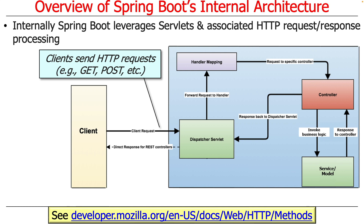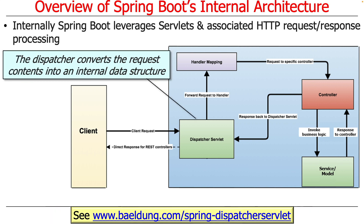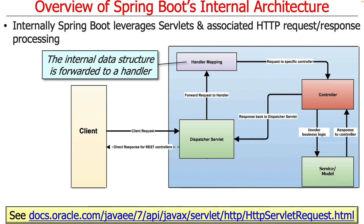Let's focus on GET requests to make things easy. A client sends a URL to the server, embedded with information about the request. Something called the dispatcher servlet receives that request, reads it in, and puts it into an internal data structure. The dispatcher servlet then starts the rest of the processing wheels in motion for the Java business logic code we write. It forwards the encapsulated HTTP GET request to a handler mapper, or handler mapping component, which keeps track of all the controllers registered in the application process.